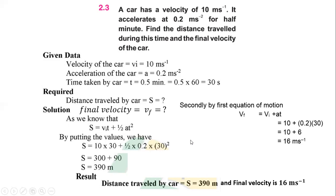Now we evaluate the final velocity using the first equation of motion: VF = VI + A·T. Putting in 10 m/s for VI, 0.2 for A, and 30 for T — multiply and add — gives VF = 16 meters per second. The result: the distance traveled by the car is 390 meters and the final velocity is 16 meters per second.